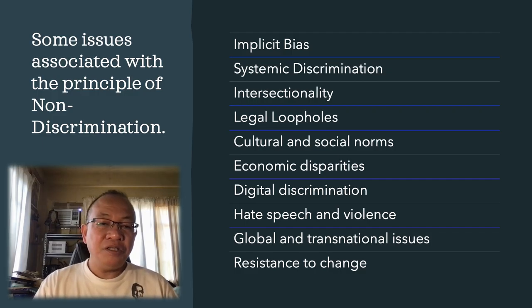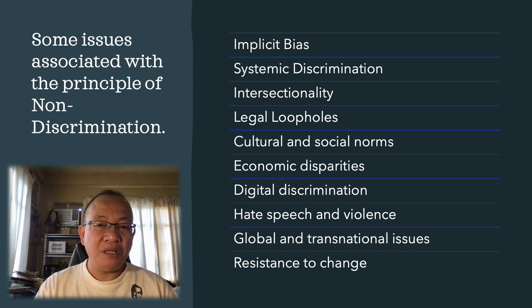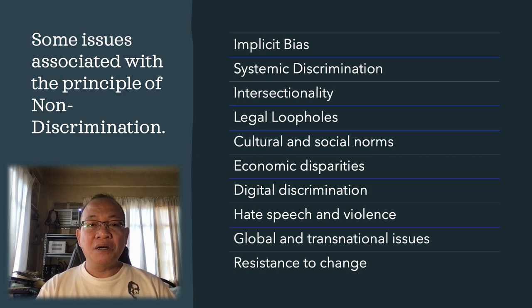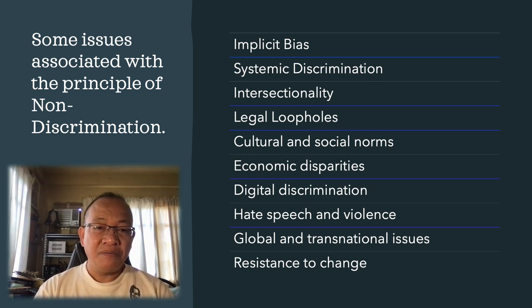Here are some of the issues associated with the principle of non-discrimination. The principle of non-discrimination is fundamental in ensuring fairness, equality, and justice in various aspects of society. However, there are several issues and challenges associated with its implementation and realization. The first one is implicit bias. Discrimination can occur unintentionally due to unconscious biases held by individuals or institutions. These biases can lead to unequal treatment based on factors such as race, gender, age, disability, sexual orientation, or religion.